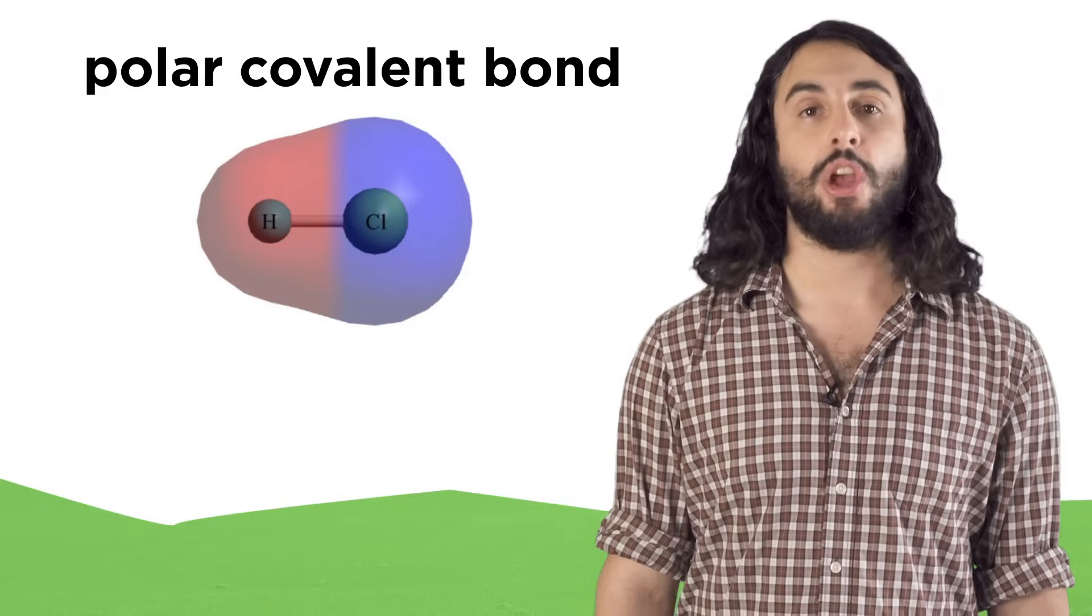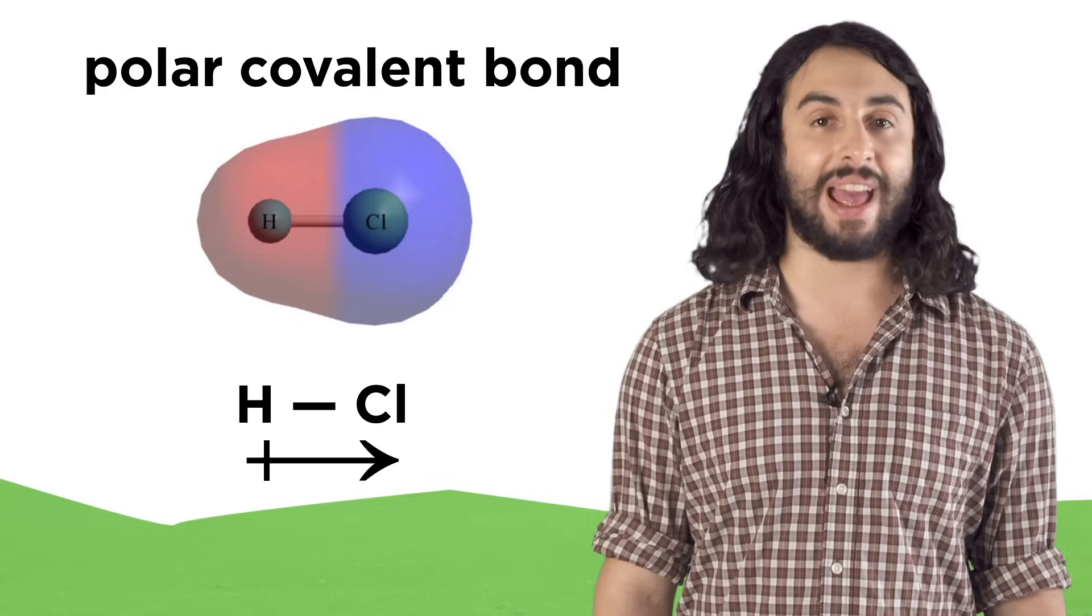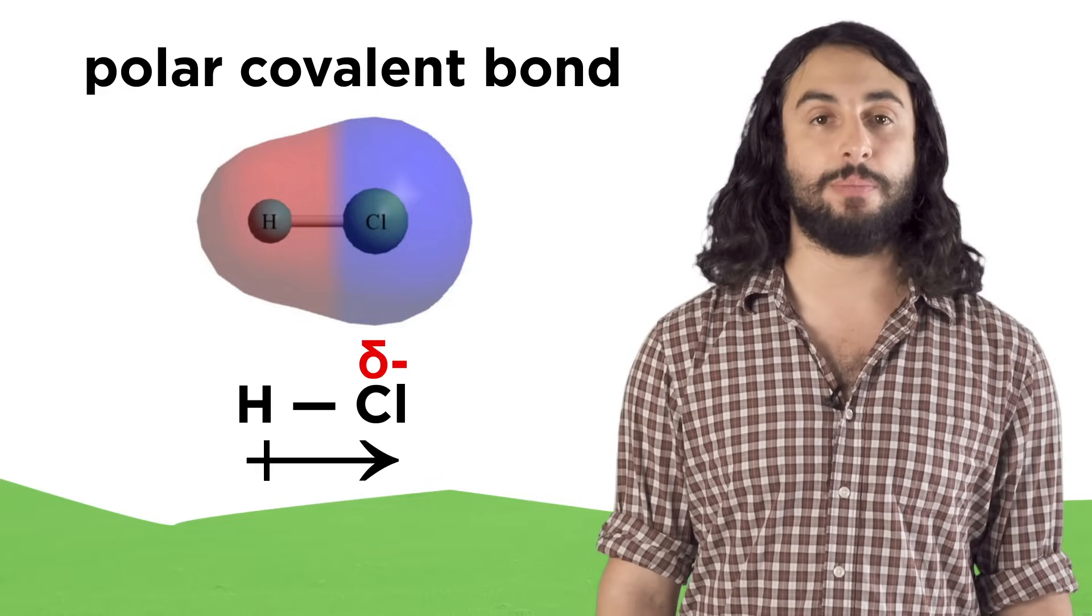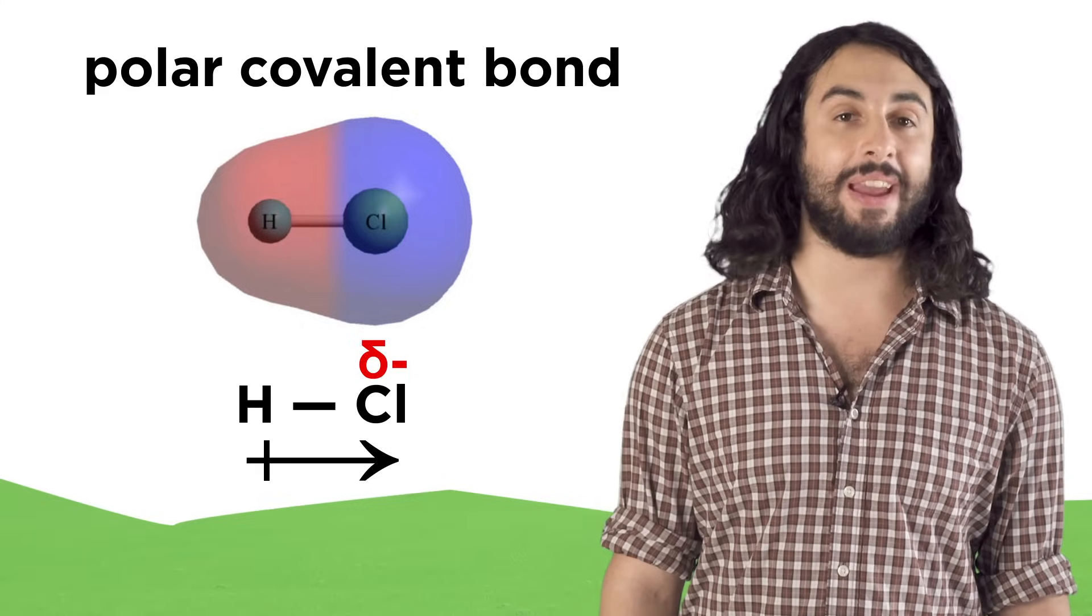The more electronegative atom in a polar covalent bond pulls the electron density towards itself, and as a result of the slight electron excess, we call this atom partially negative, denoted by the symbol delta minus. The atom whose electron is getting pulled away is slightly electron deficient and therefore partially positive, or delta plus.